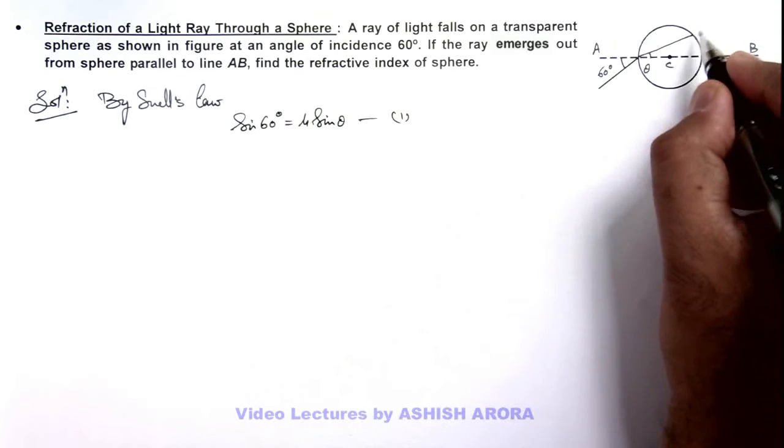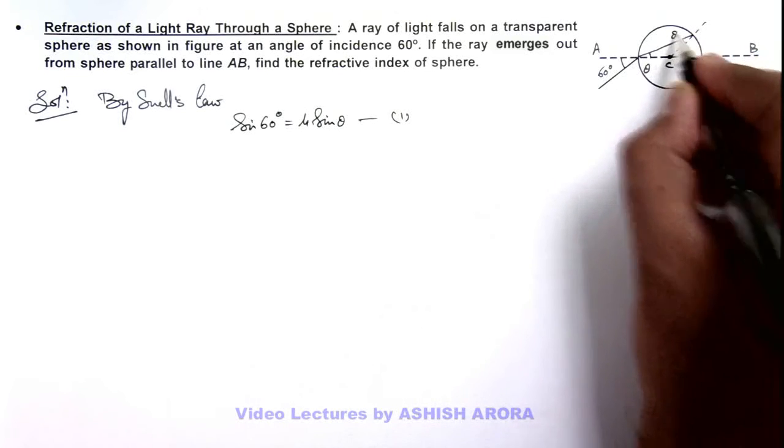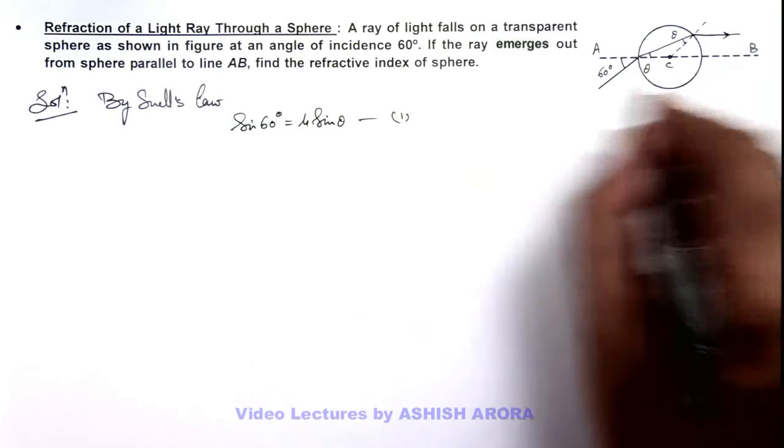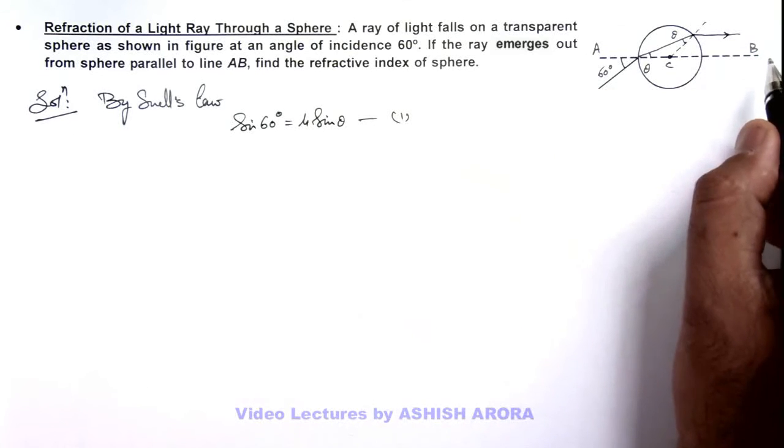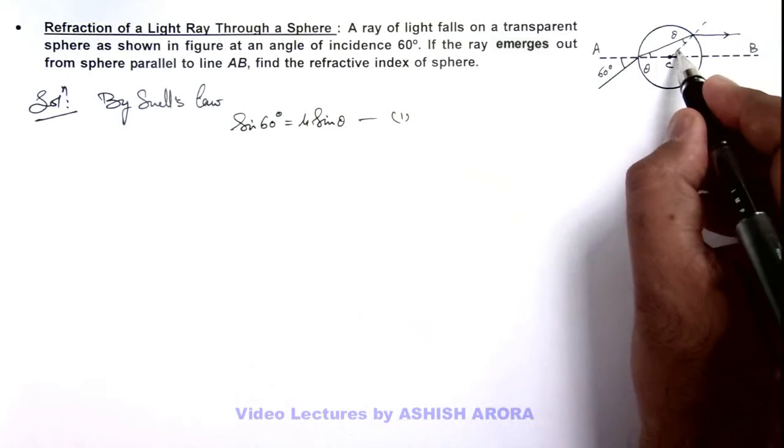When light is incident on the other face of the sphere, by symmetry we can say this angle is also theta. Since the light should finally come out parallel to line AB, if this angle is theta and this angle is theta, then this angle should be 2 theta.